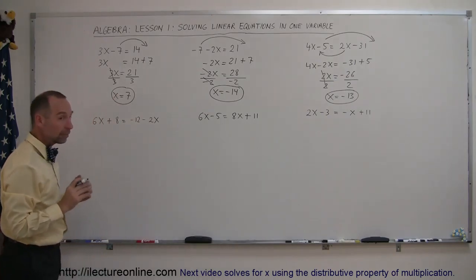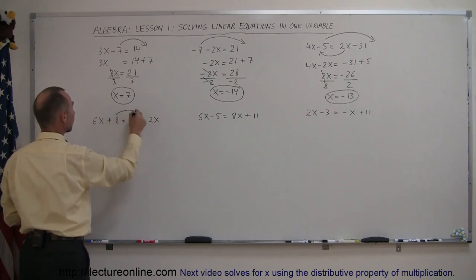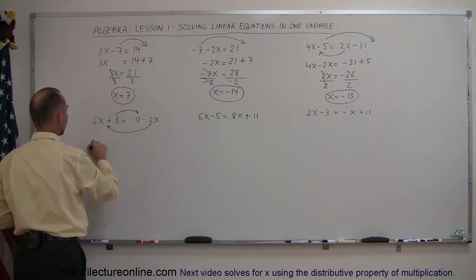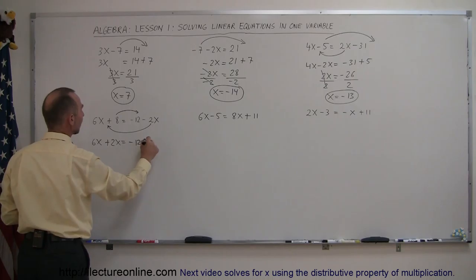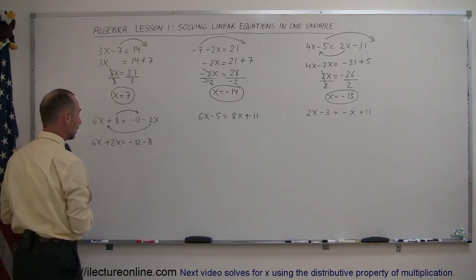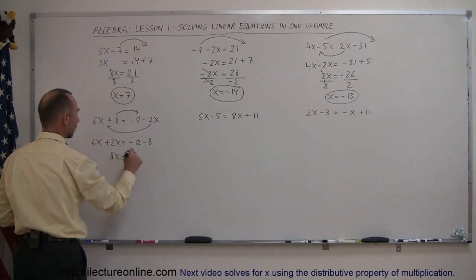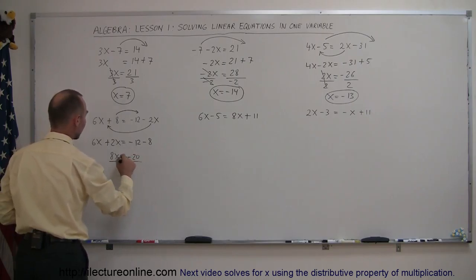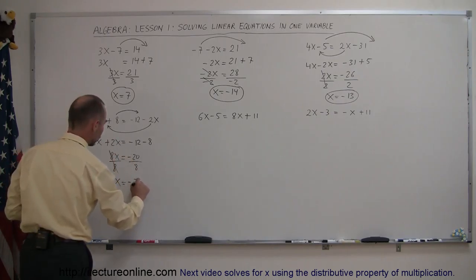Next example: the object is to move all x's to the left side and all numbers to the right. The 8 goes to the right and the minus 2x goes to the left, so it becomes 6x plus 2x. Remember, when we cross the equal sign the sign changes, so this equals minus 12 minus 8, because the plus 8 becomes a minus 8. Combining like terms: 6x plus 2x is 8x, and minus 12 minus 8 is minus 20. Dividing both sides by 8, x equals minus 2.5.